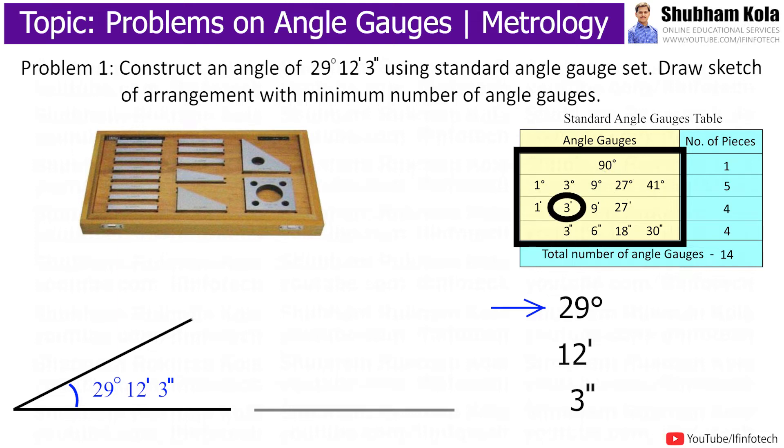We also have 1 minute, 3 minutes, 9 minutes, and 27 minutes, and 3 seconds, 6 seconds, 18 seconds, and 30 seconds angle gauges.